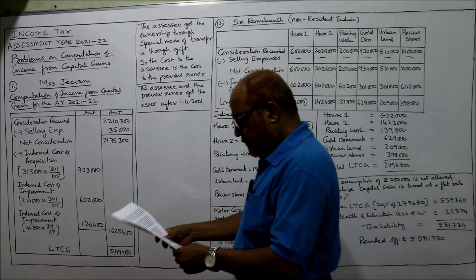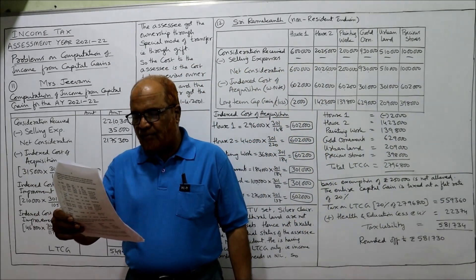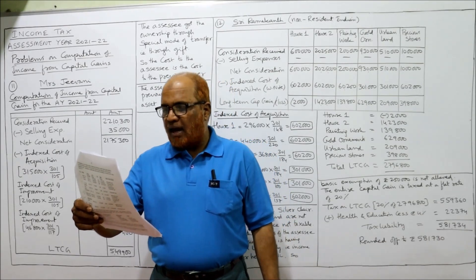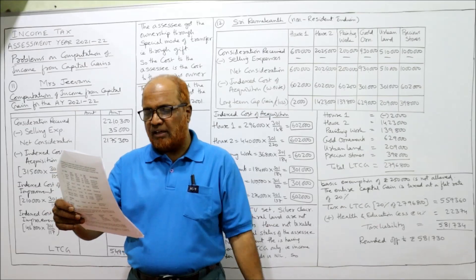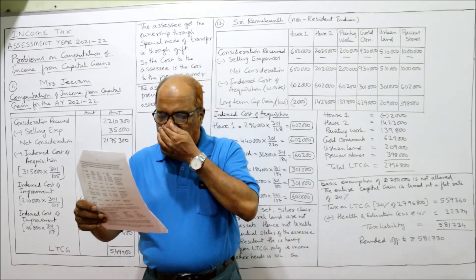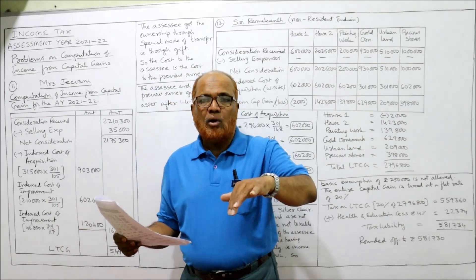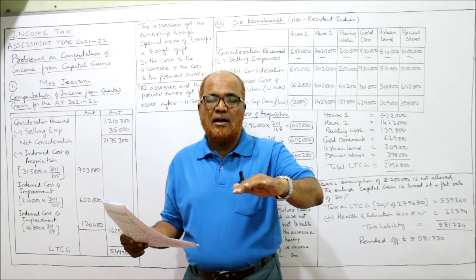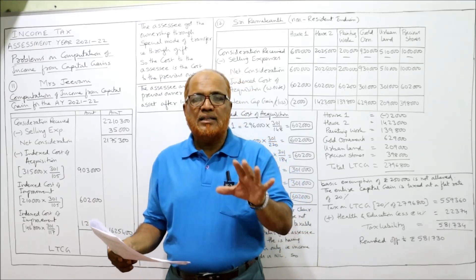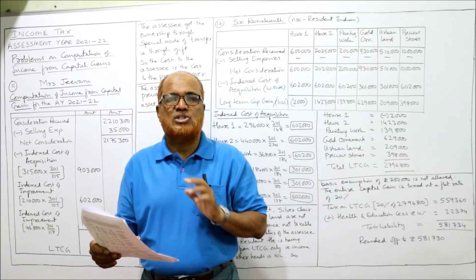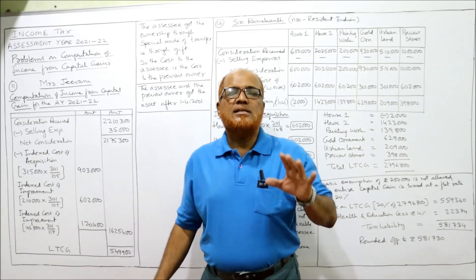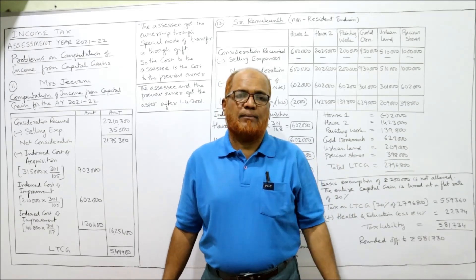See the 11th problem: Sri Kiran purchased a building for rupees three lakh fifteen thousand in October 2001 and gifted it to his daughter Mrs. Jeevani in January 2003. The other particulars are as under. The building was purchased by Sri Kiran, but later Sri Kiran gifted the property to his daughter Mrs. Jeevani. So presently the owner is Mrs. Jeevani.